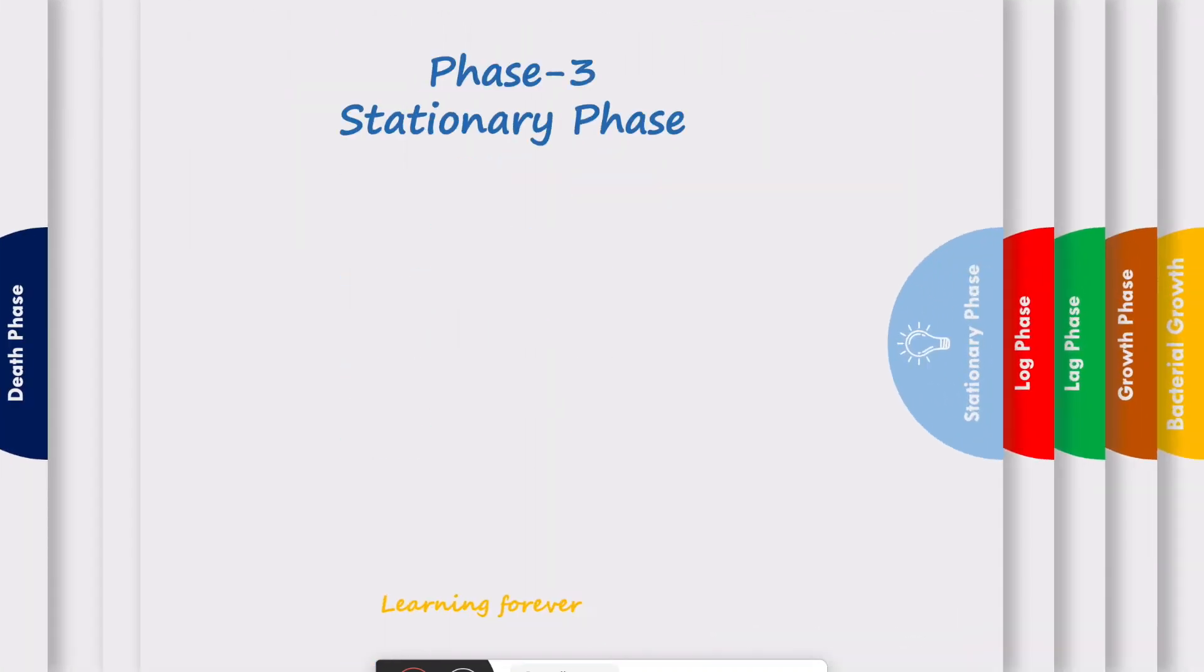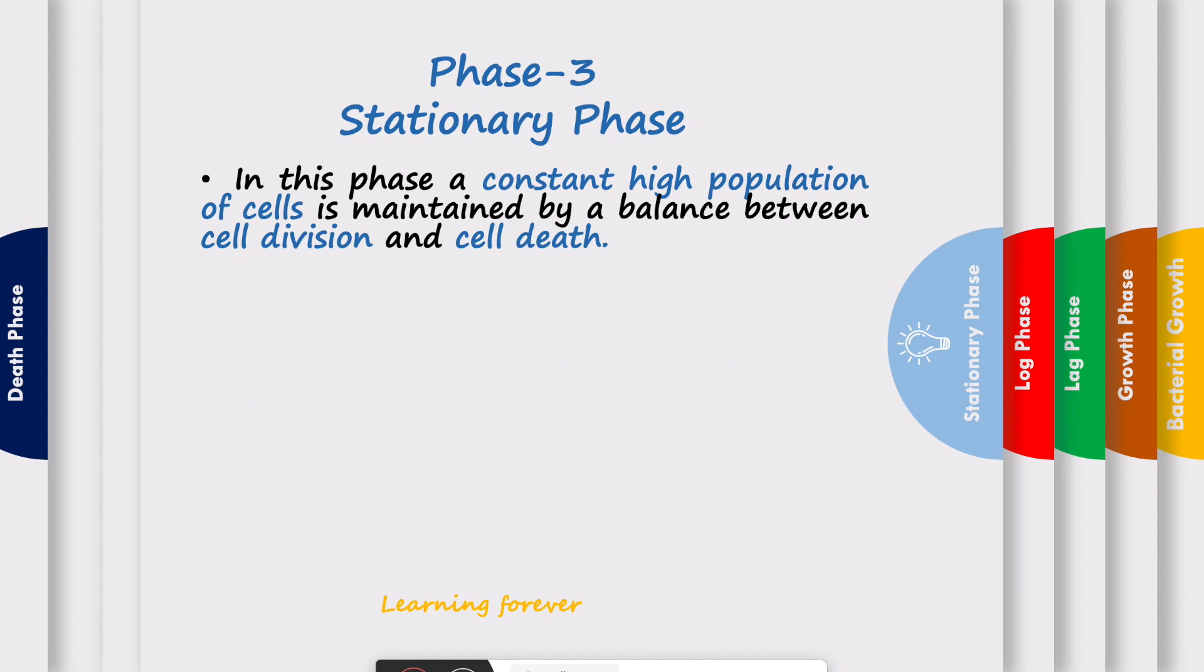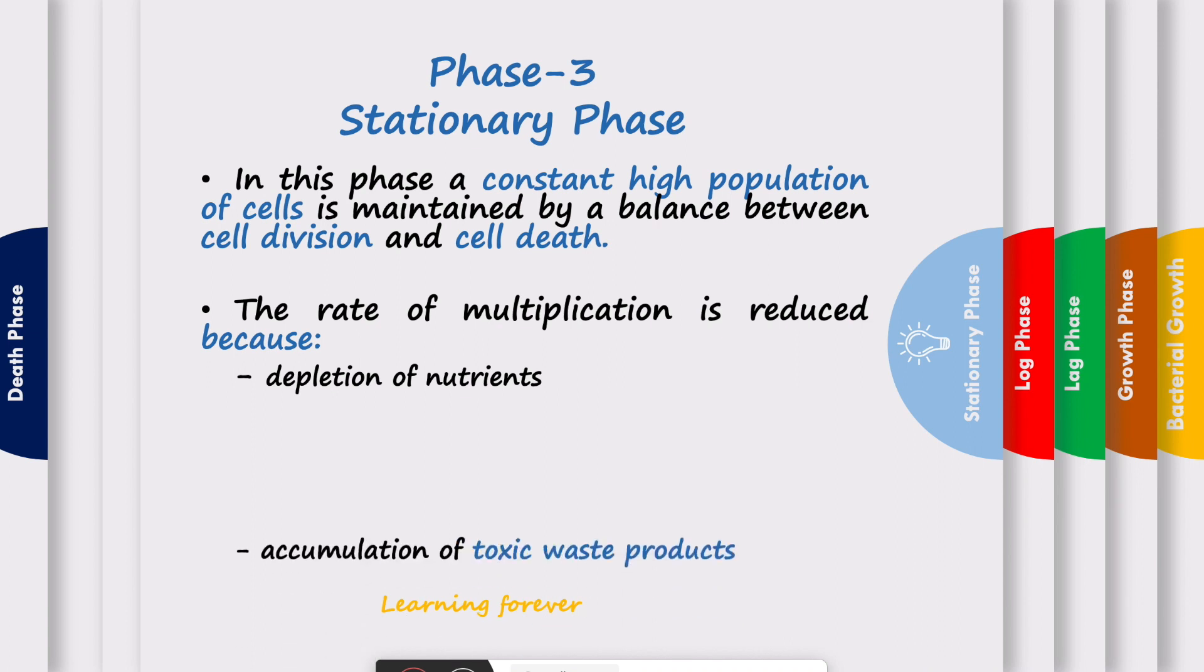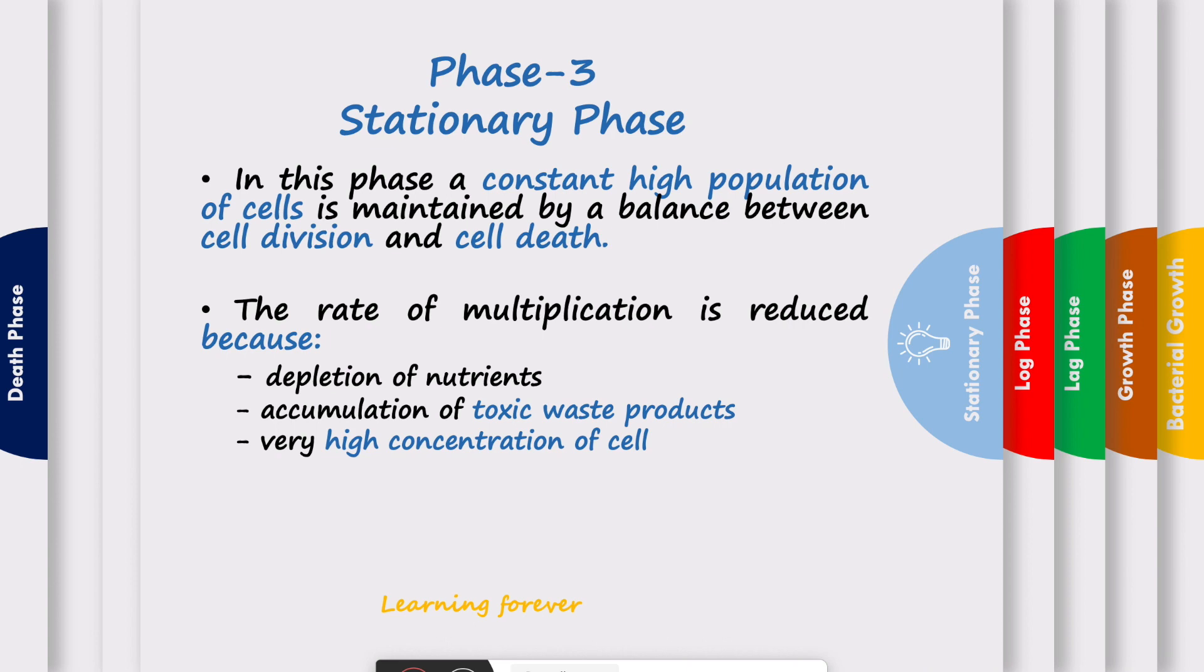Let us see phase three. Phase three is called the stationary phase. In this phase, a constant high population of cells is maintained by balance between cell division and cell death. The rate of multiplication is reduced in this phase because of depletion of nutrients, accumulation of toxic waste products, very high concentration of cells, and low partial pressure of oxygen. This is the phase where cell division equals cell death and cell death is just started.